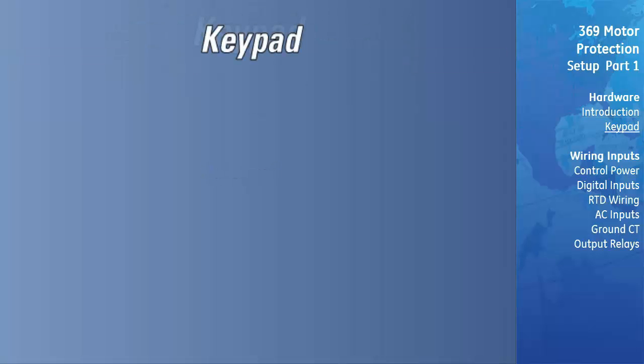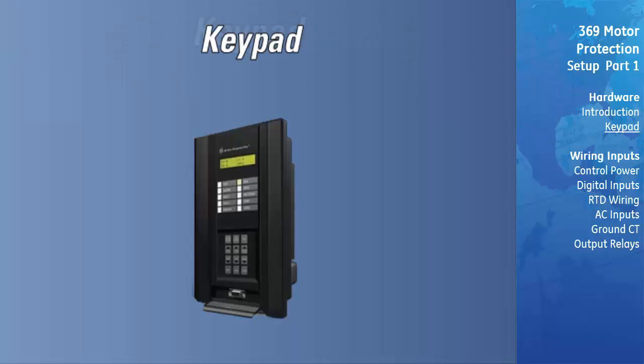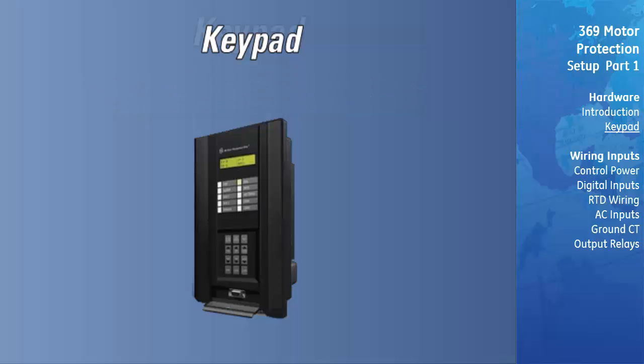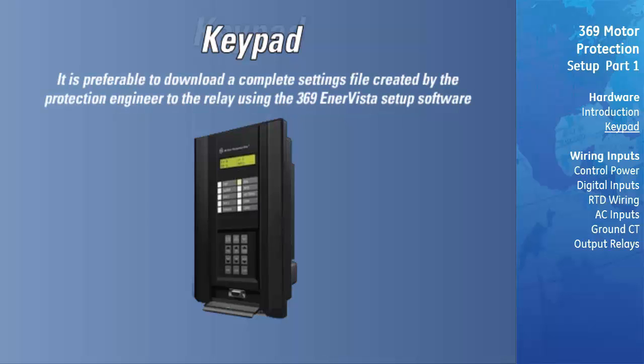After the 369 Plus has been wired and control power applied, it can be programmed. Programming can be accomplished with the 12 position keypad and 48 character alphanumeric display. However, it is preferable to download a complete settings file created by the protection engineer using the 369 EnterVista setup software. The following is a description of the operation of the keypad and display.